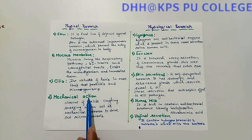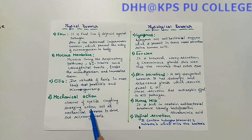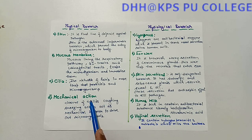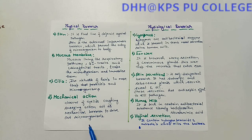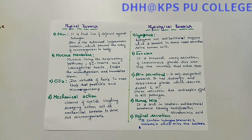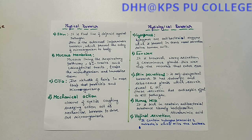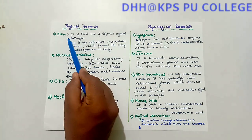The next physical barrier is mechanical action. Mechanical actions are done by the body involuntarily. They are nothing but closure of the eyelids, coughing, sneezing, etc. These mechanical actions drive out microorganisms from the body. So the physical barriers are skin, mucous membrane, cilia, and mechanical action.